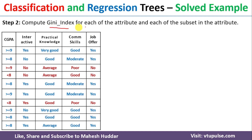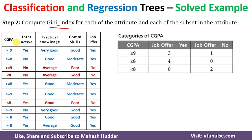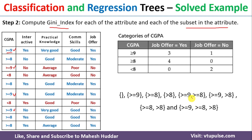In the second step, we need to compute the Gini index of each attribute and each of the subsets within that attribute. For example, we consider CGPA in the first iteration. CGPA has three possibilities: greater than or equal to 9, greater than or equal to 8, and less than 8. For all these possibilities, we write how many Yes and No examples there are. There are totally eight subsets possible because 2 raised to 3 equals 8, excluding the null and full-set subsets, leaving subsets with one value and subsets with two values.